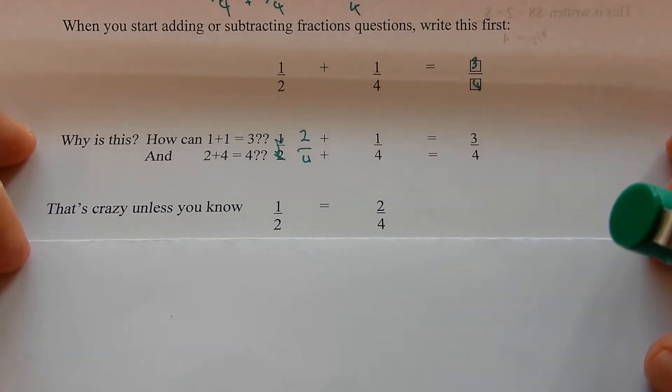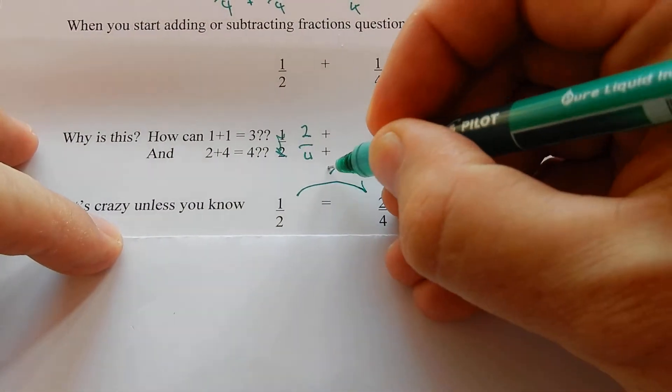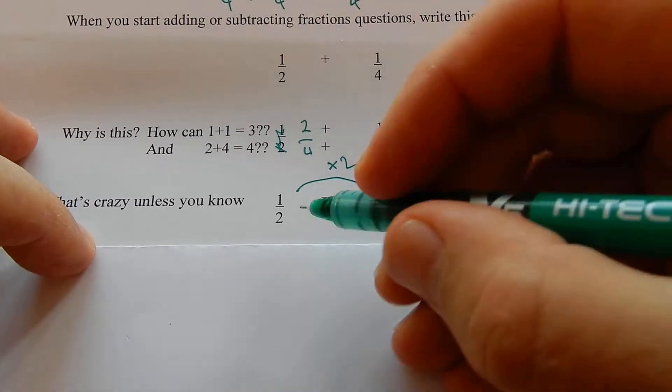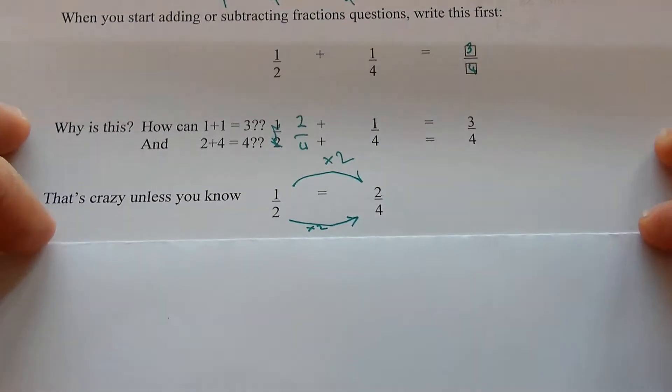It's crazy unless you know that a half is worth two quarters. Times by two the top, times by two the bottom to get equal fractions.